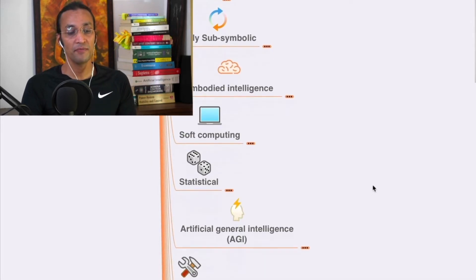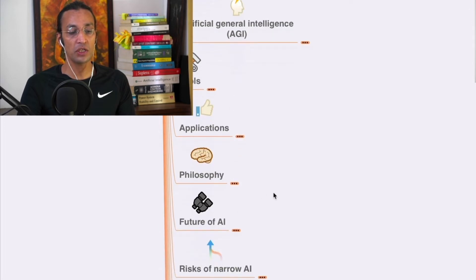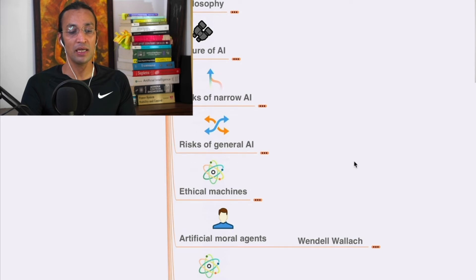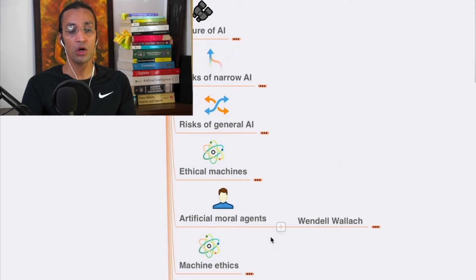We'll also cover statistical approaches, artificial intelligence, artificial general intelligence (AGI), tools, applications, philosophy, future of AI, risks of narrow AI, risks of general AI, ethical mechanics, and artificial moral agents.